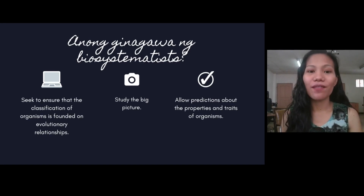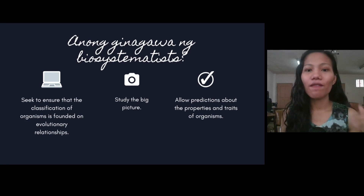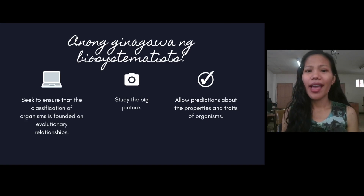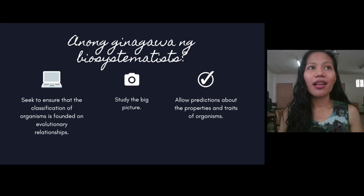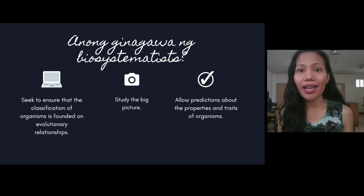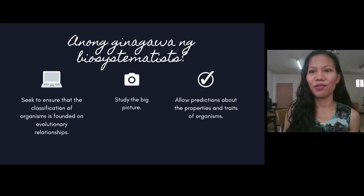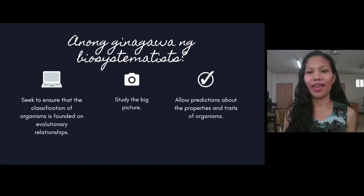Second, we have the study of the big picture — functional versus biological science, as explained earlier. Third, we allow predictions about the properties and traits of organisms. We must remember that uncertainty is the engine of science. We try to supplement predictions with evolutionary science and climate science — but these are still predictions until proven.